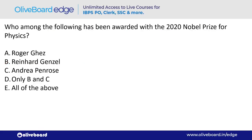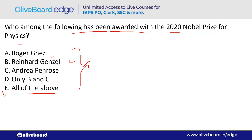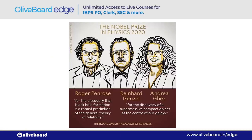Who has been awarded the 2020 Nobel Prize for Physics? All three winners: Roger Penrose (for the discovery that black hole formation is a robust prediction of the general theory of relativity), Reinhardt Genzel, and Andrea Ghez (for discovery of a supermassive compact object at the center of a galaxy).